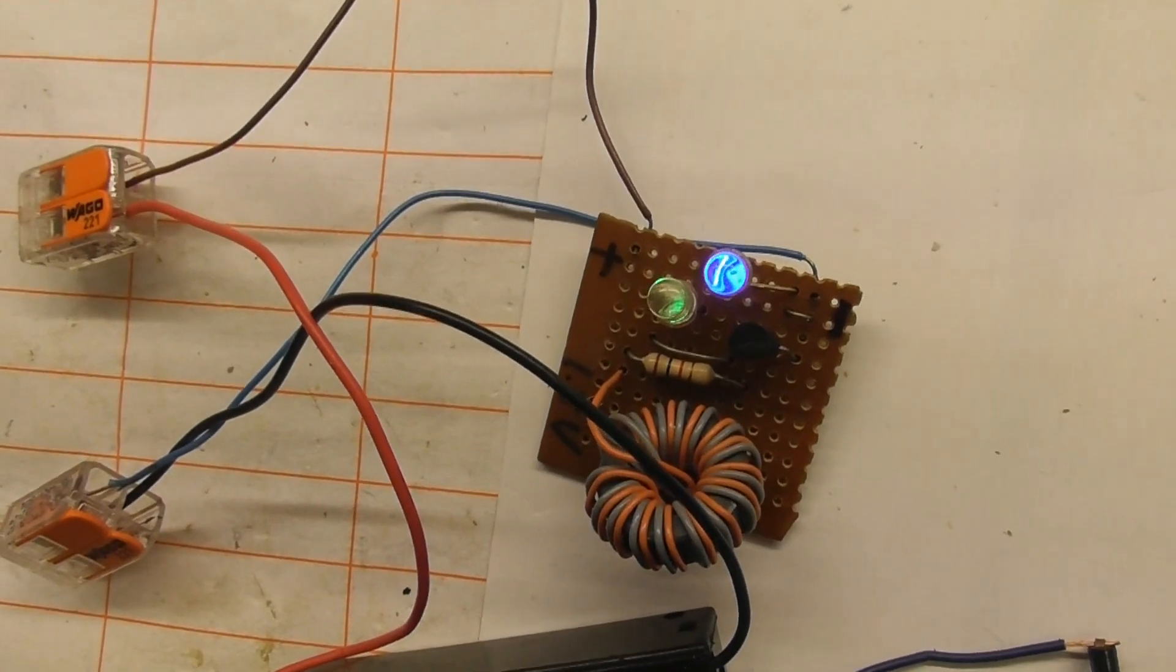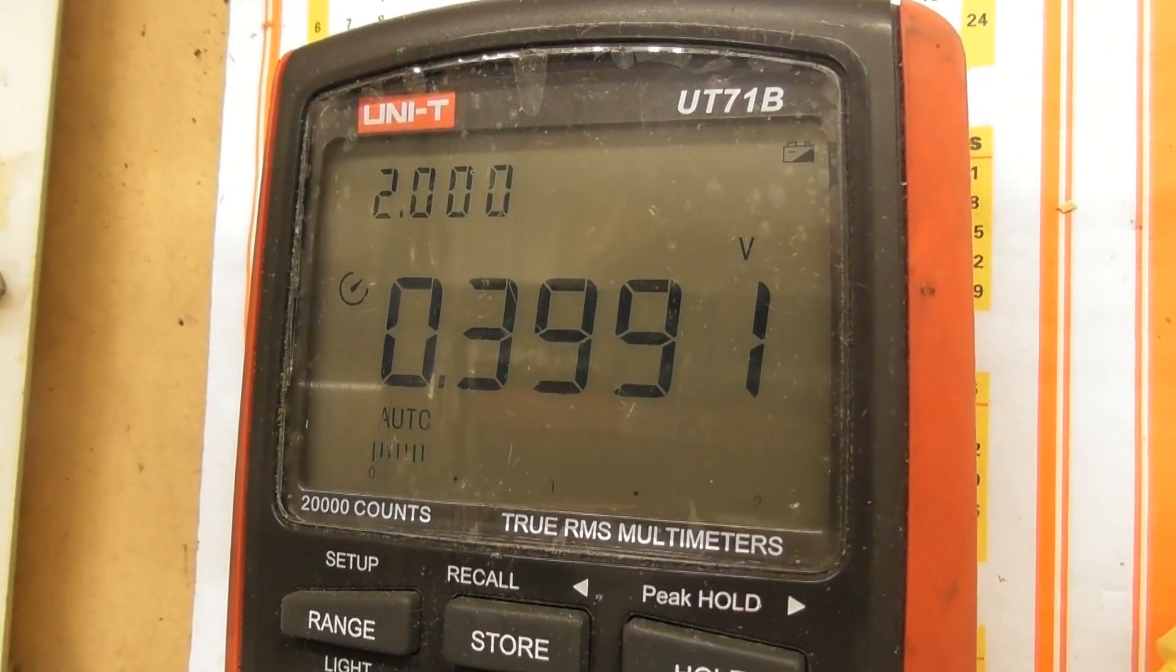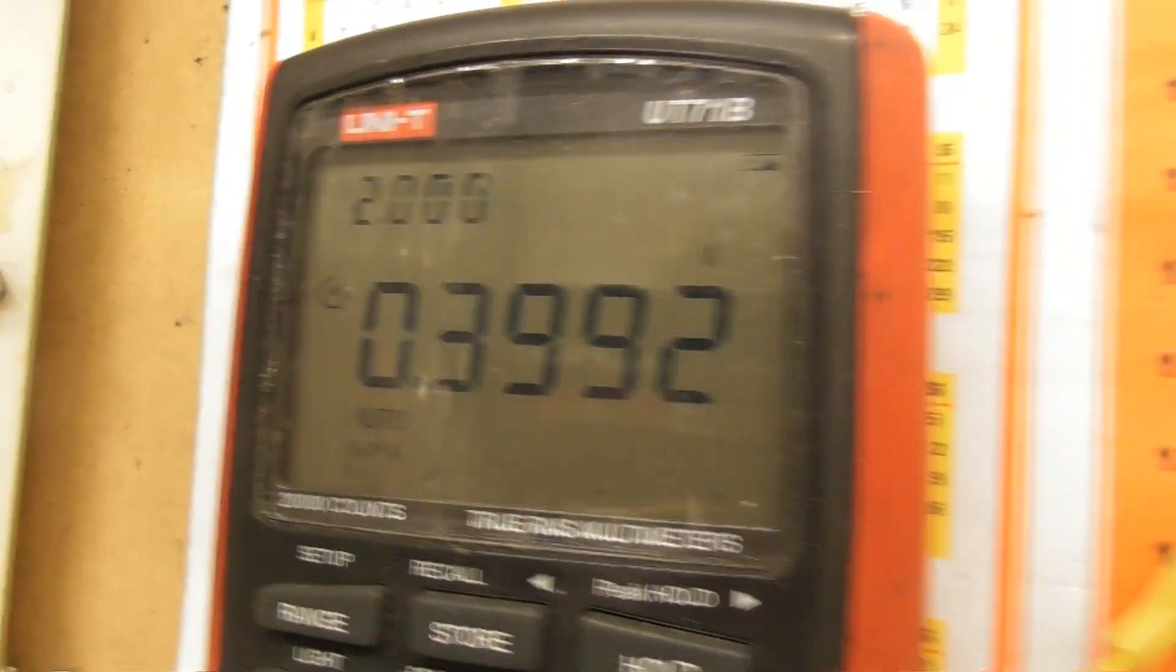Well, Joule Thief part 2. It's actually still going at 0.4 volts, 0.3991 volts. Still glowing.